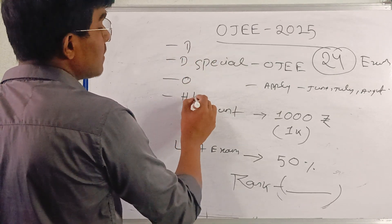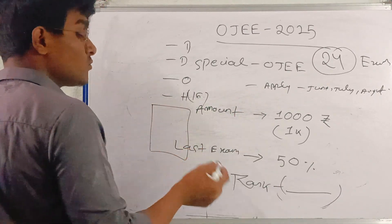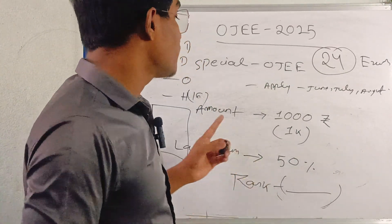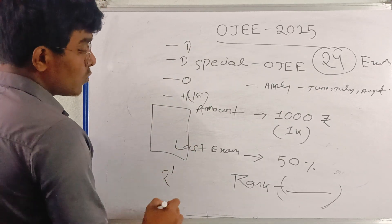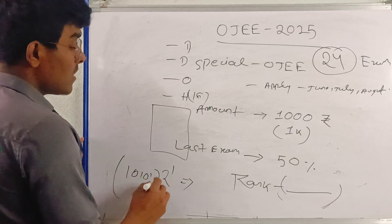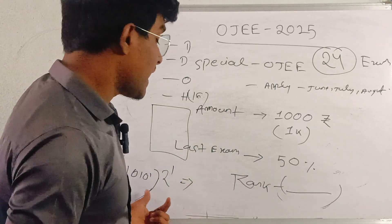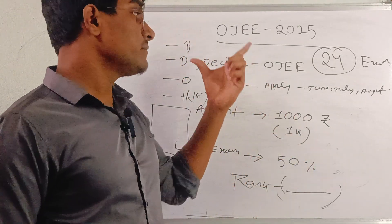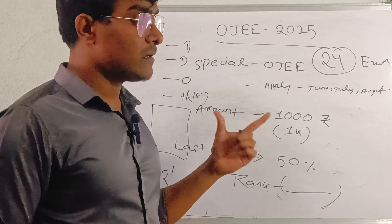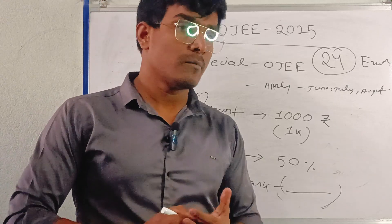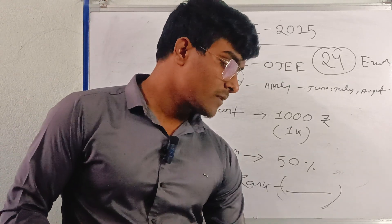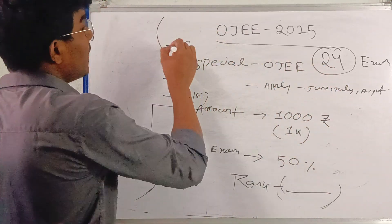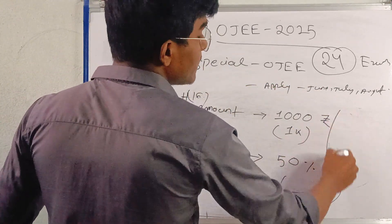In the next class we will discuss the number system — binary, octal, and hexadecimal — in our course. Also, for OJ-related OJ examination in 2025, we discussed the respective dates, eligibility criteria, and form applying. If you have any questions, drop them in the comment section. I promise all students preparing for OJ NCA that with proper preparation you will definitely get a great rank.